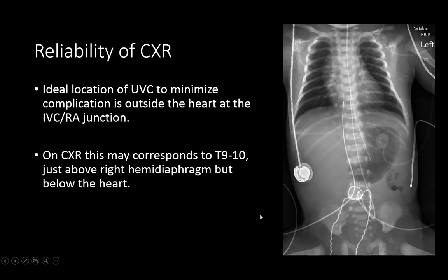Traditionally, and still today, X-rays are the most common method to evaluate the position of umbilical catheters. The ideal location for the umbilical catheter tip — to minimize cardiac and hepatic complications — is at the junction of the inferior vena cava and the right atrium, just outside the heart.